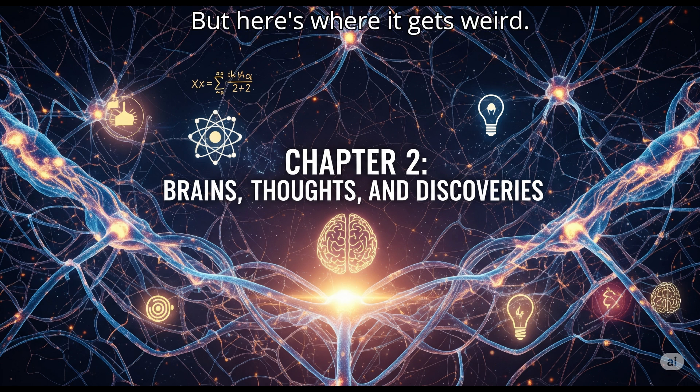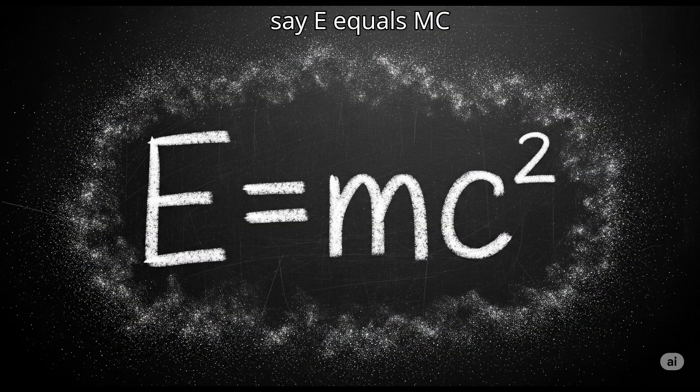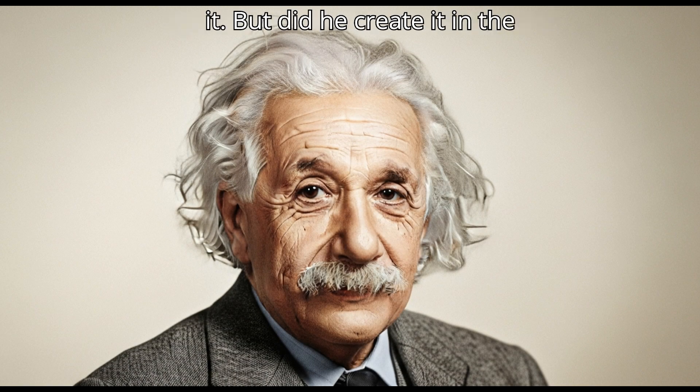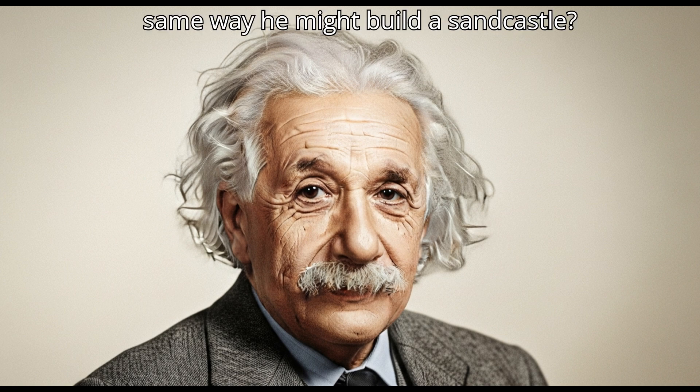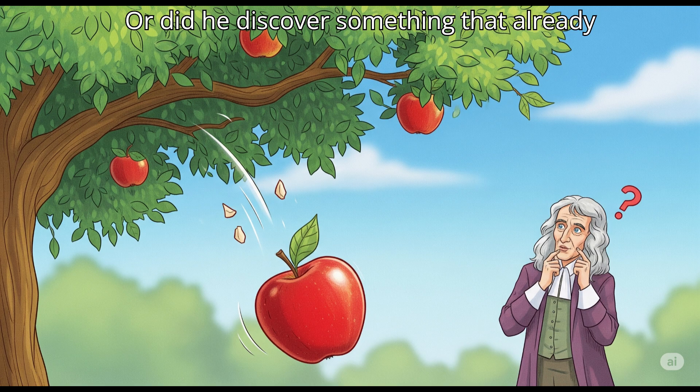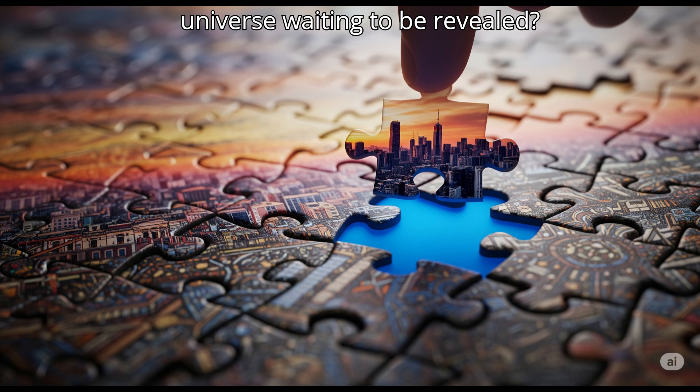But here's where it gets weird. Think about a complex mathematical equation. Say, E equals MC squared. Albert Einstein thought of it. But did he create it in the same way he might build a sandcastle? Or did he discover something that already existed? An inherent truth about the universe waiting to be revealed?